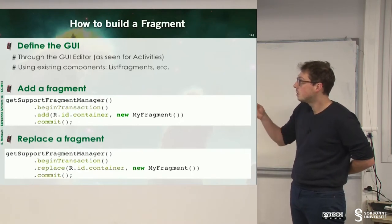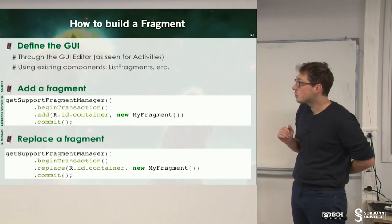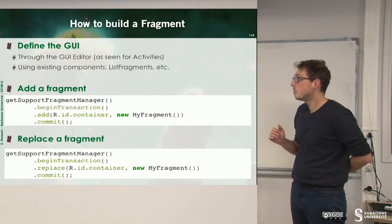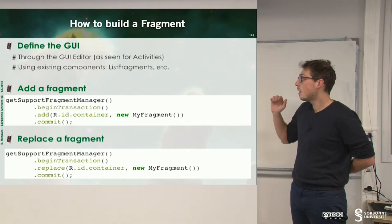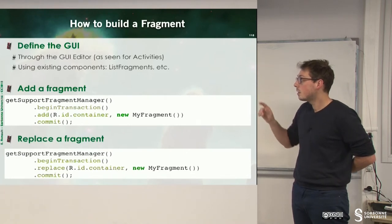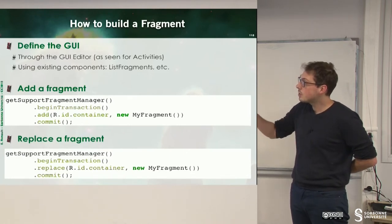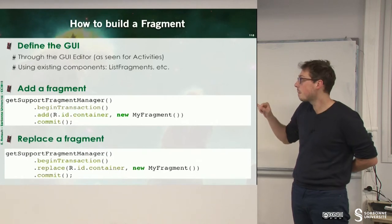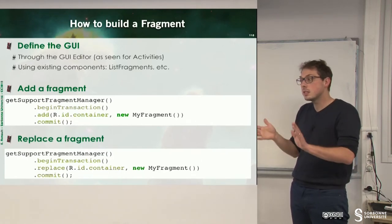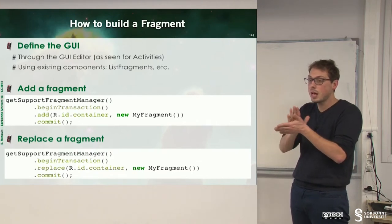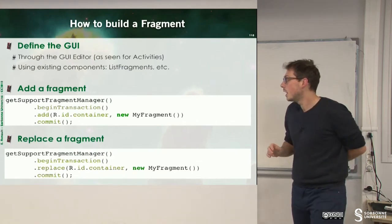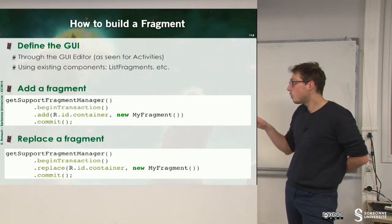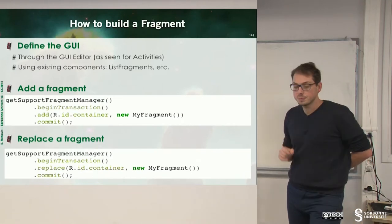To add a new fragment, I have to ask for the support fragment manager, begin a transaction, add my new fragment. When I fix the add method, I have to specify where the fragment will be displayed and the name of my new fragment, and then I have to commit. When I commit, my fragment will appear inside of the screen. You can also replace a fragment, always by new fragment.